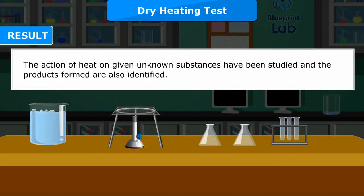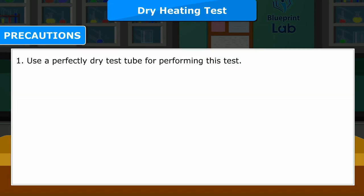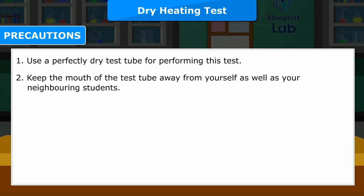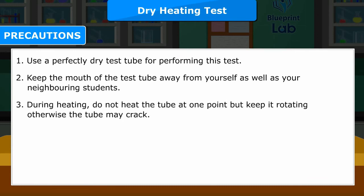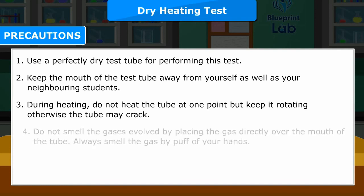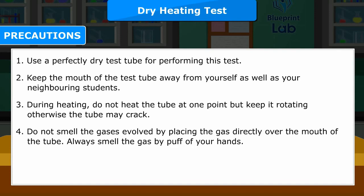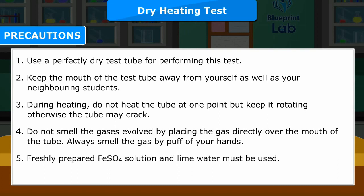Result: The action of heat on the given unknown substances has been studied and the products formed are also identified. Precautions: 1. Use a perfectly dry test tube for performing this test. 2. Keep the mouth of the test tube away from yourself and neighboring students. 3. During heating, do not heat the tube at one point but keep it rotating, otherwise the tube may crack. 4. Do not smell gases by placing the tube directly over your mouth — always waft the gas toward you. 5. Freshly prepared FeSO4 solution and lime water must be used.